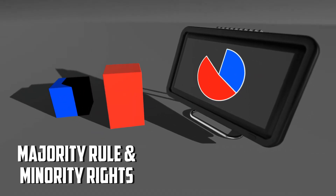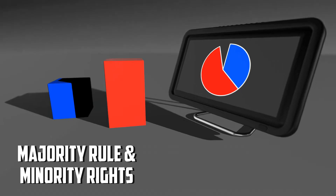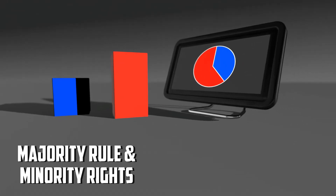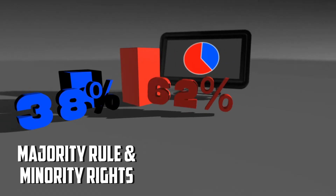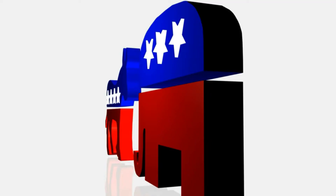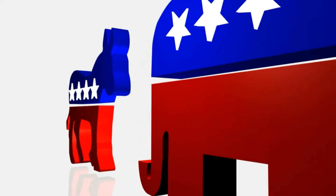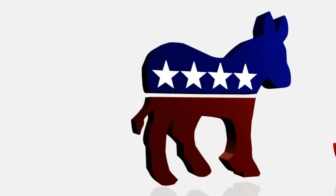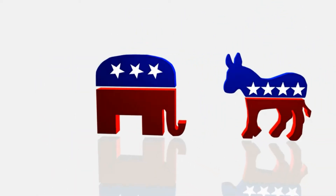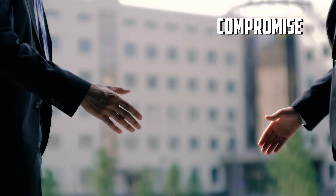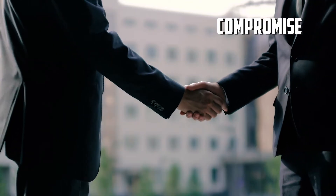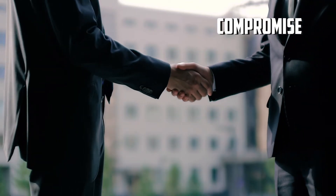The third principle is the balance between majority rule and minority rights. In the American political system, the faction that wins elections becomes the majority party, granting that party the right to rule. However, the rights of the political minority are protected in the political process, allowing all sides the ability to have a voice in policy making.